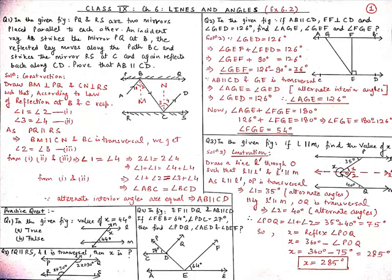Since AB is parallel to CD where GE is the transversal, we can say that angle AGE equals angle GED by alternate interior angles. Since angle GED is equal to 126 degrees, therefore angle AGE is also equal to 126 degrees.